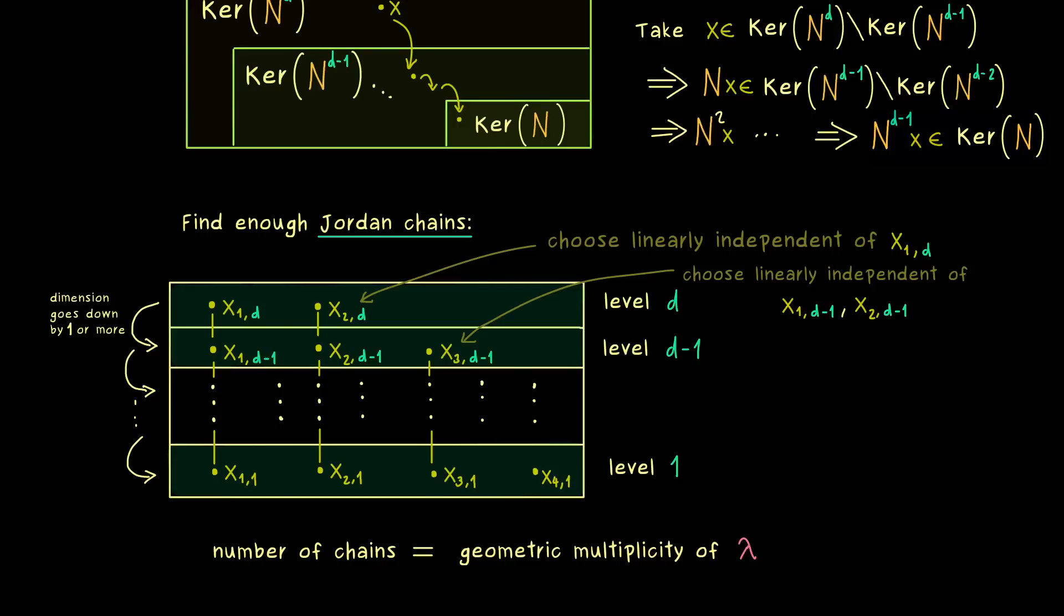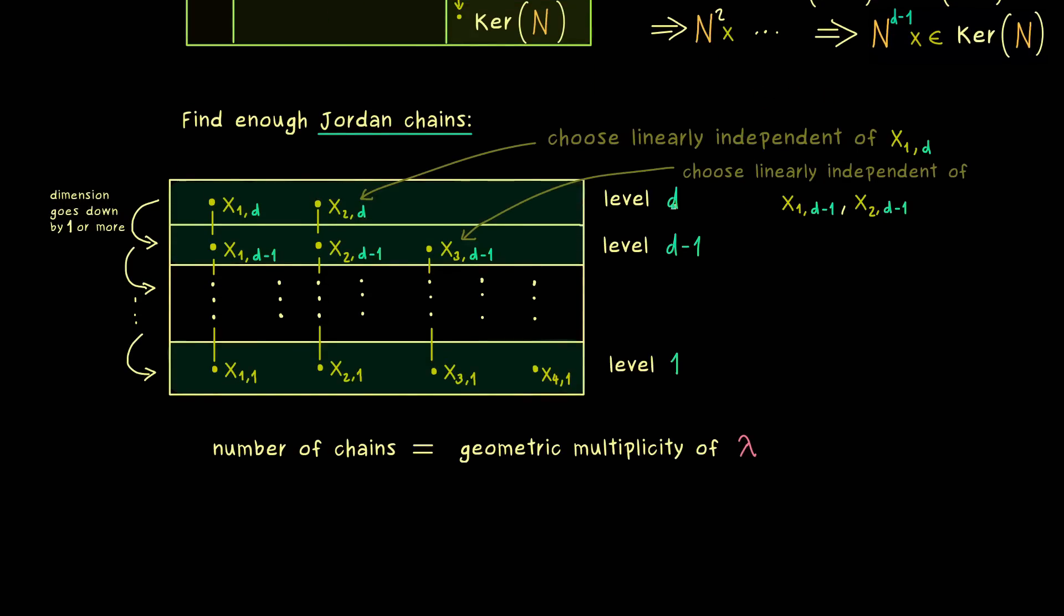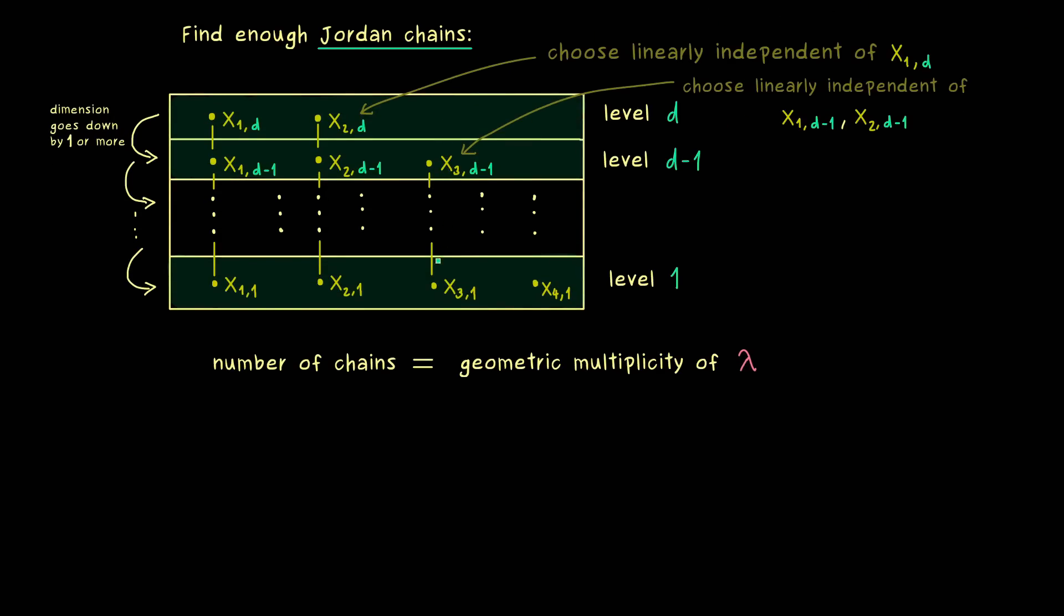And as already mentioned before, by the construction of the chain, such a Jordan chain forms a Jordan box. In fact, the size of such a square Jordan box is given by the length of the chain.